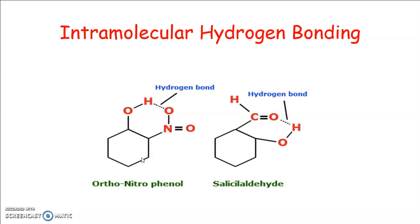Intramolecular hydrogen bonding occurs in enols, chelates, etc., and is particularly strong. The OH-stretching frequency will always be less than 2800 cm⁻¹. Since these bonds are not easily broken even in dissolution or by an inert solvent, free OH-stretching vibration will not be observed.